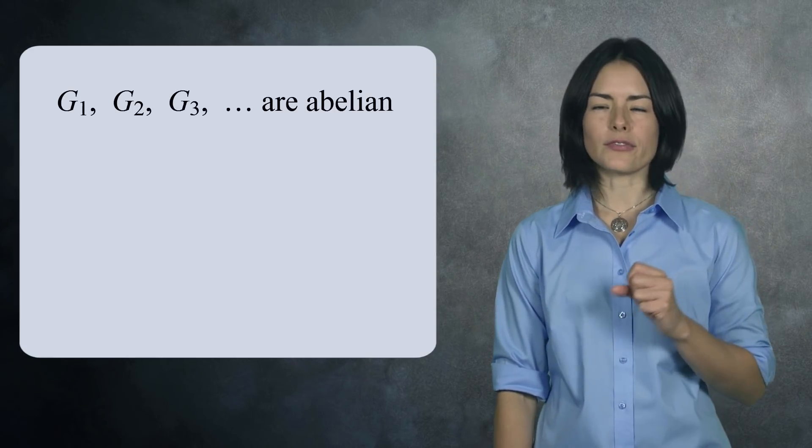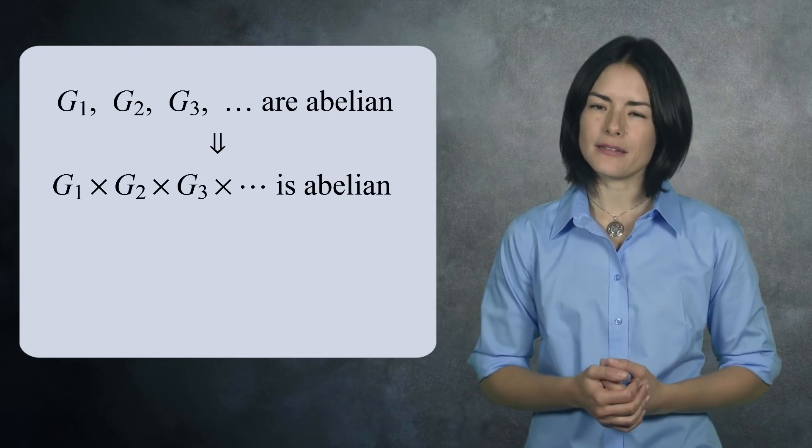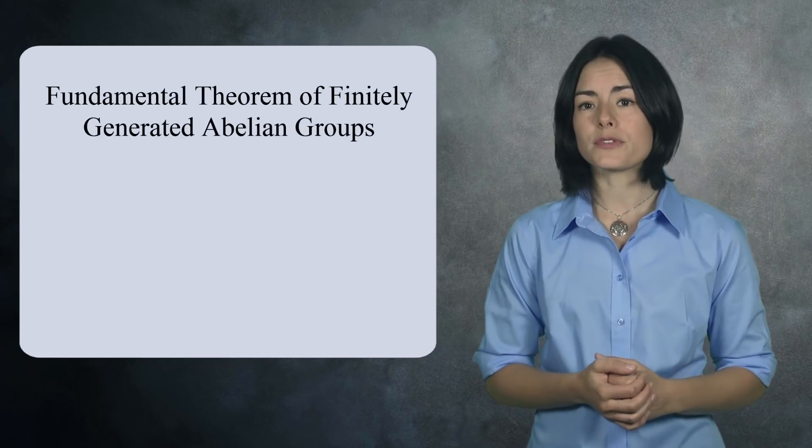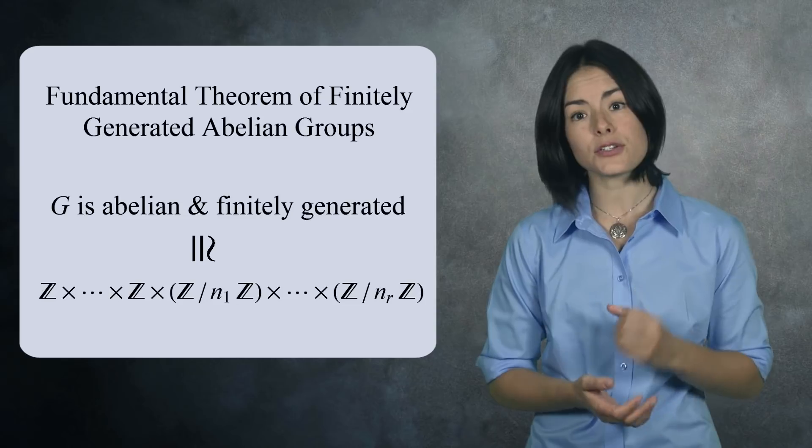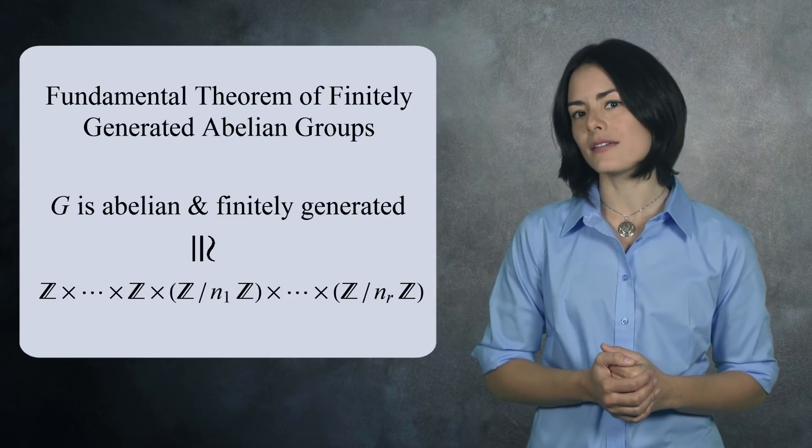If all of the groups are abelian, however, then the direct product will also be abelian. You'll use this fact when proving the fundamental theorem of finitely generated abelian groups, which says that any finitely generated abelian group is the direct product of the integers or the integers mod n for various n. The direct product is a useful tool for breaking some groups into simpler groups — but not all groups, since there are many groups which are not direct products of simpler groups. Luckily, there are other tools for deconstructing groups, and we'll cover those in separate videos.